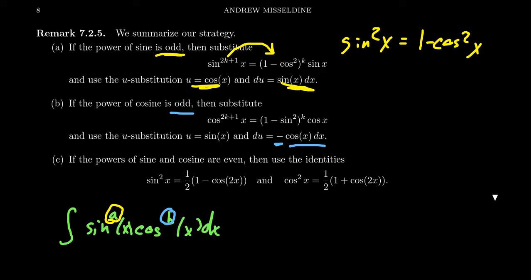So if du is giving negative cosine, then you want u to be sine, and then you have to transition all of the cosines into sines using the Pythagorean identity cosine squared x equals 1 minus sine squared.